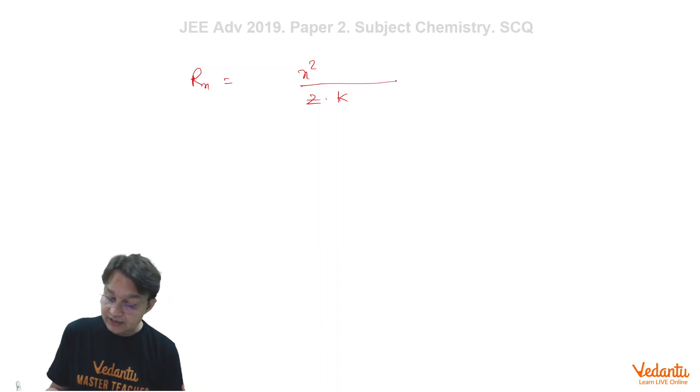And this is n square, so of course associated with H square ZK upon 4 pi square M E square. That is the full expression of Rn. So you don't need to remember this.